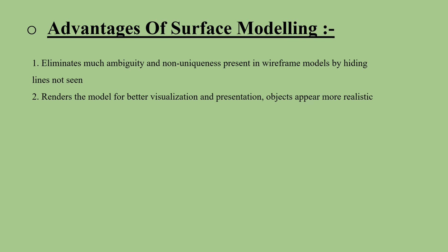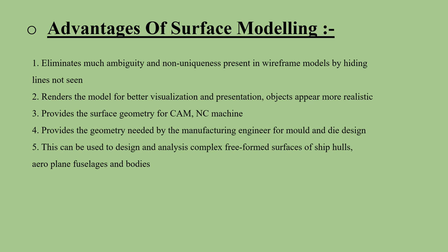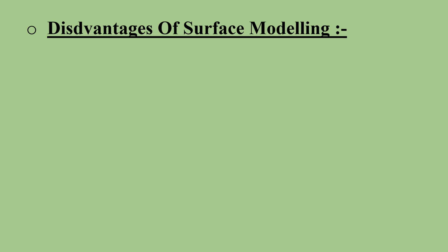It provides the surface geometry for CAM, NC machine, and provides the geometry needed by the manufacturing engineer for mold and die design. This can be used to design and analyze complex free-form surfaces of ship hulls, fuselages, and bodies. Surface properties such as roughness, color, and reflectivity can be assigned and demonstrated.